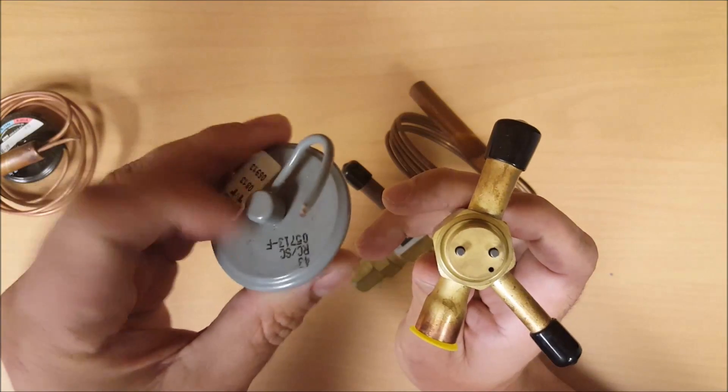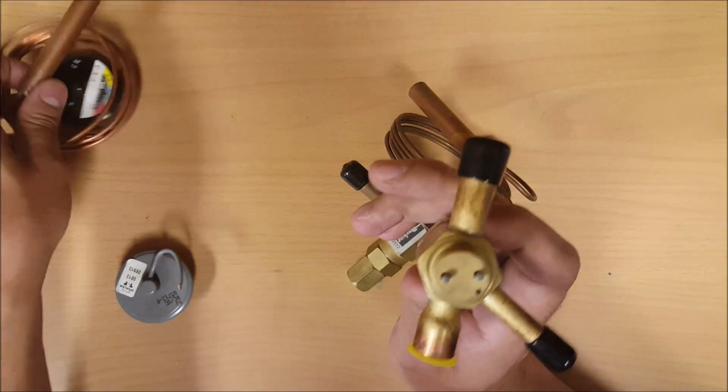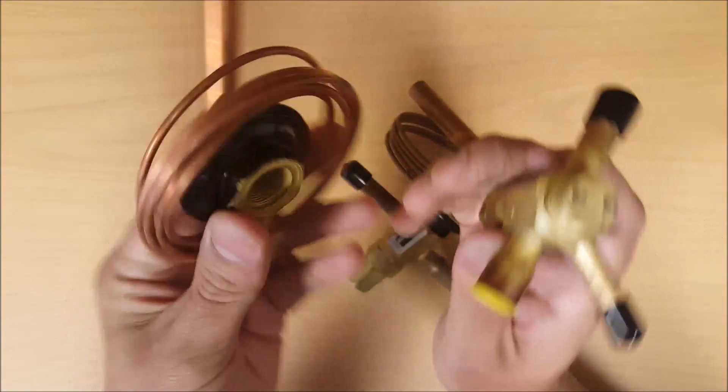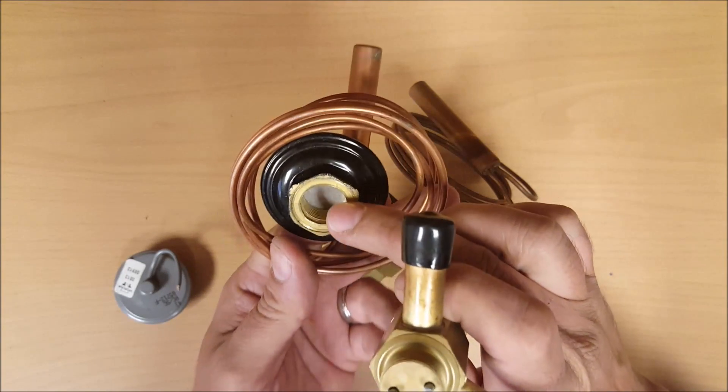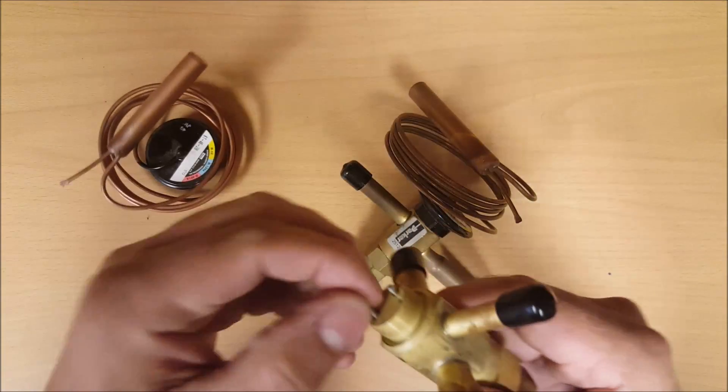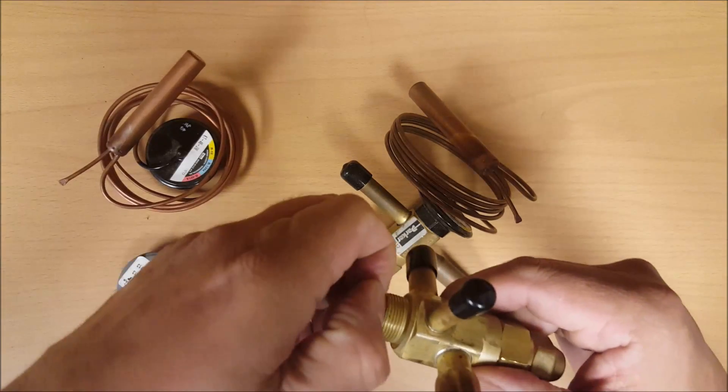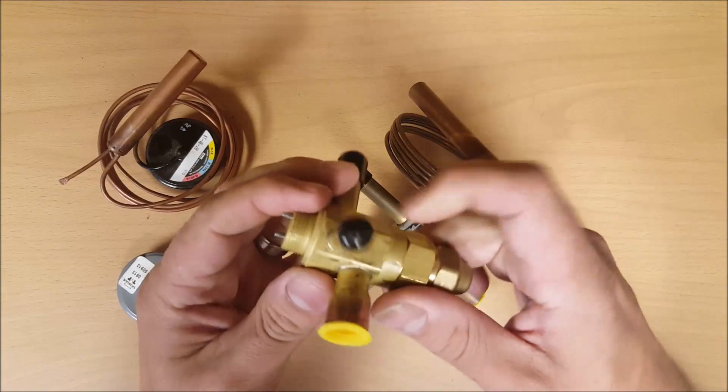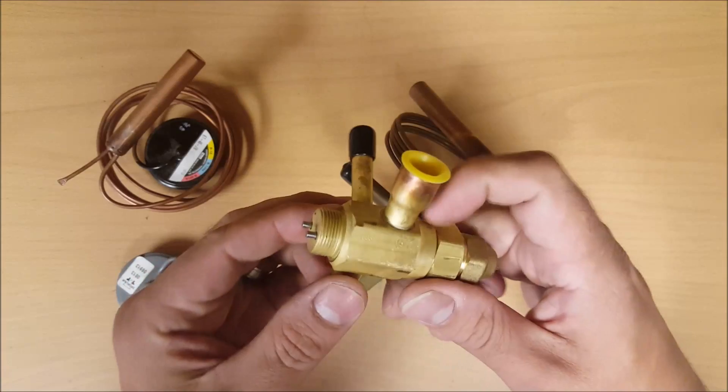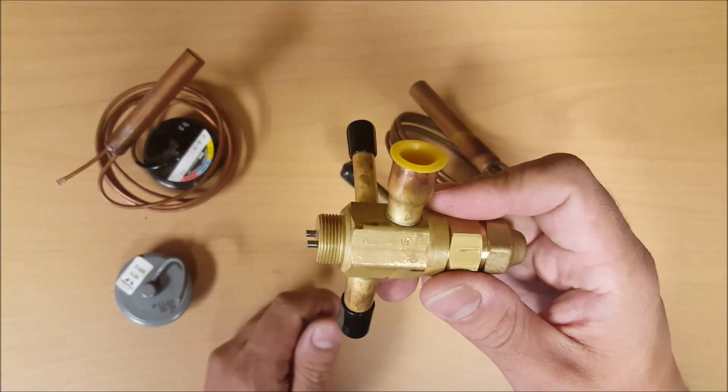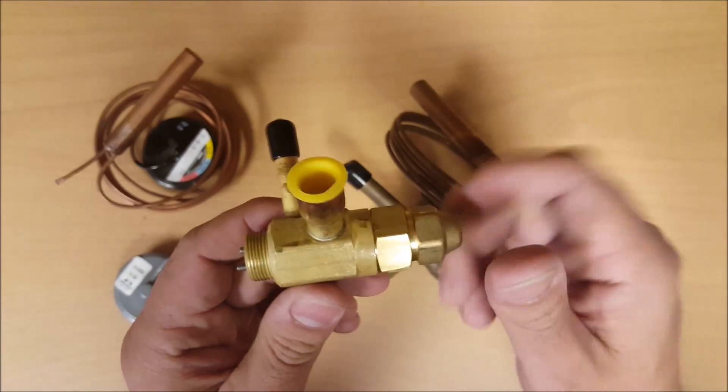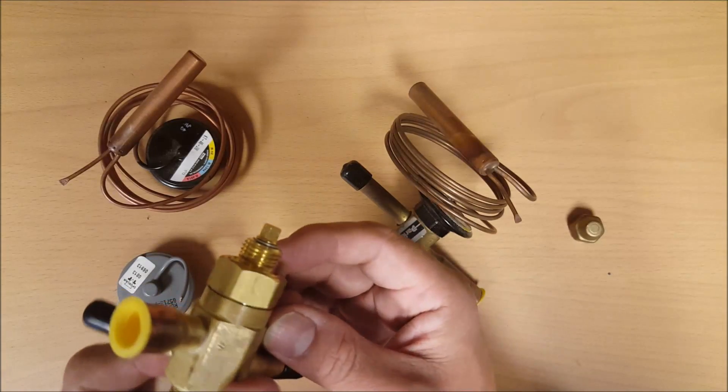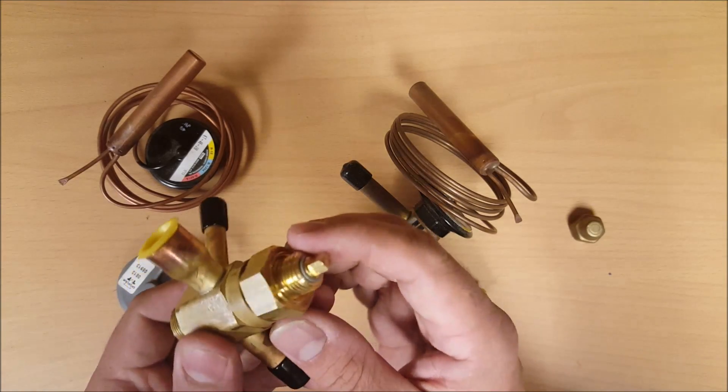This power element has the bulb that's reading temperature on your suction line. As the temperature fluctuates, it's going to move this disc in here up and down, putting pressure on these rods. That's going to either push or give way to your disc in here to allow more refrigerant or less refrigerant into your evaporator. That's in conjunction with a spring pressure here.